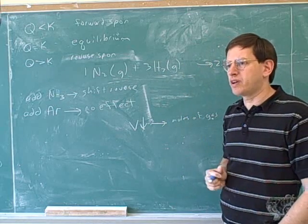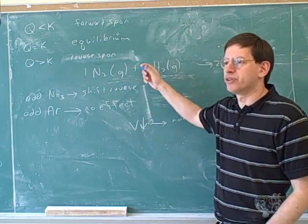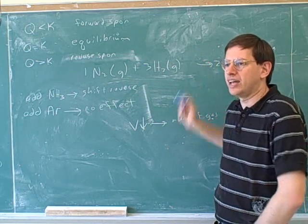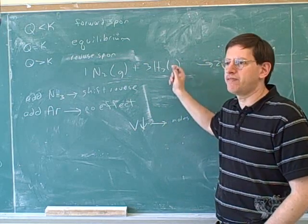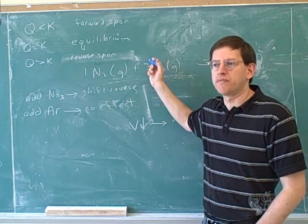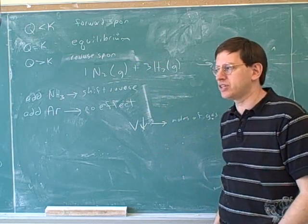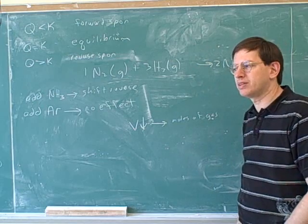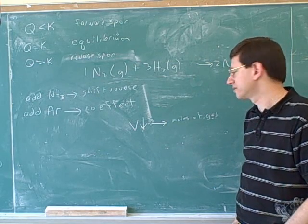So we're losing two moles of gas every time this reaction goes forward. So it looks like you already figured out the technique here, which is to count the number of moles of gas on each side. This is one more reason to label the phases. You just add the stoichiometric coefficients to figure out how many moles of gas are being used on the right.